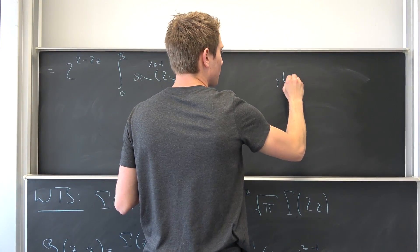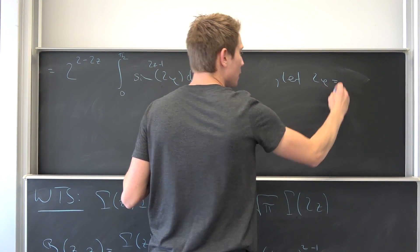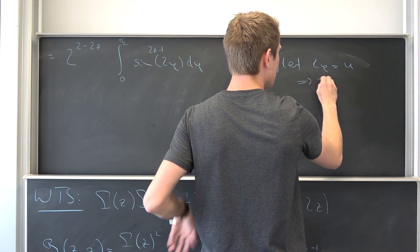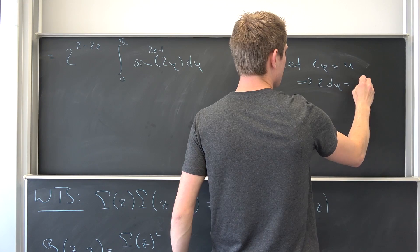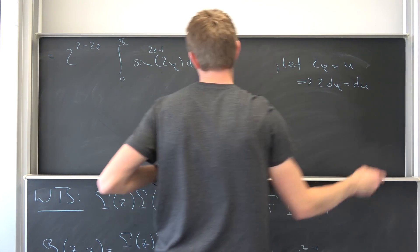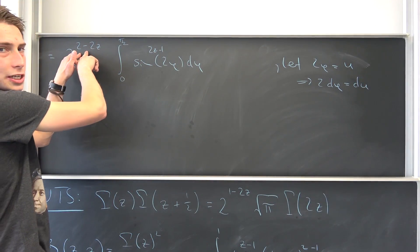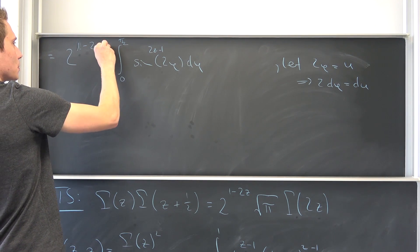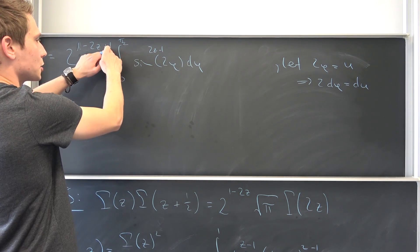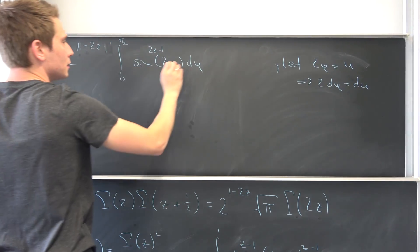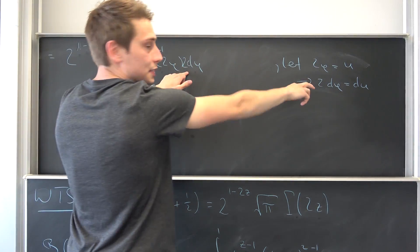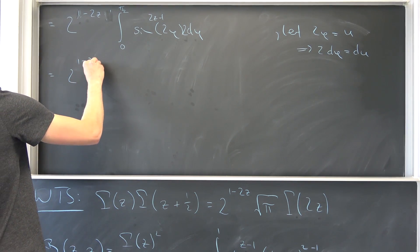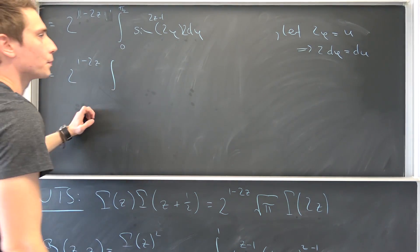Meaning, let 2 phi equal u. Then 2 d phi equals du. We actually have a 2 here because this 2 is 1 plus 1 — we can drag this to the inside. So 2 times d phi is nothing but du, giving us 2 to the 1 minus 2z power times the transformed integral.